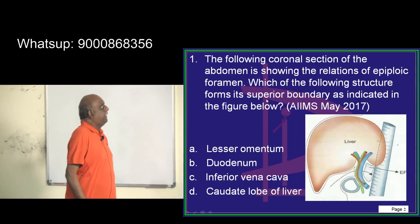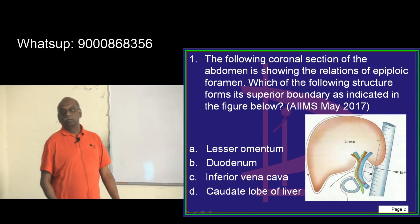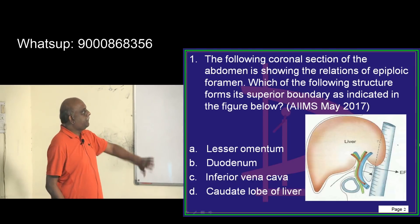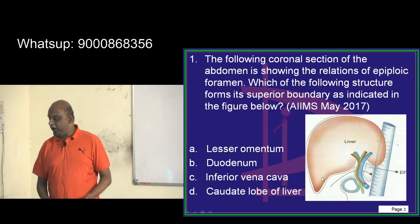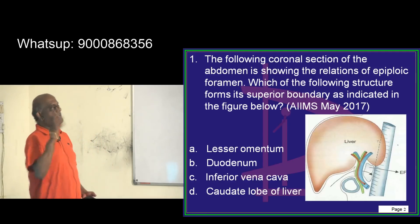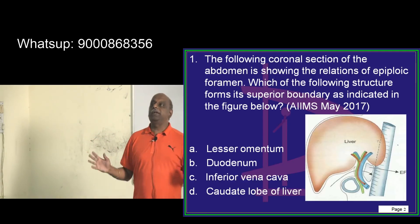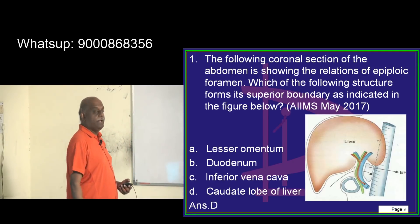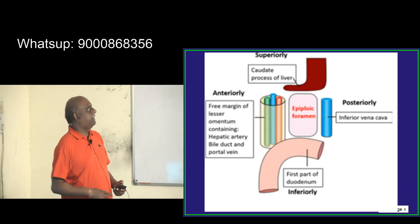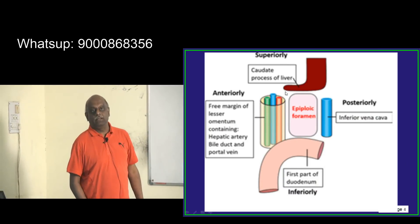The relationship of the epiploic foramen — which is the superior boundary of the epiploic foramen — from times immemorial, epiploic foramen boundaries is a favorite high-yield topic by the examiner. So it is the caudate lobe of the liver superiorly.